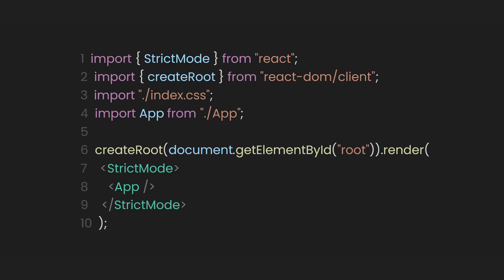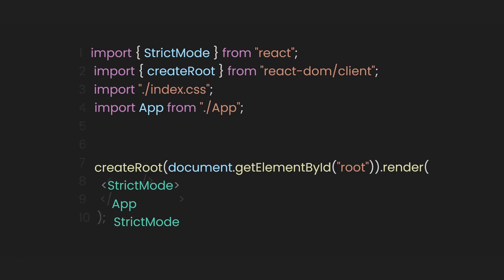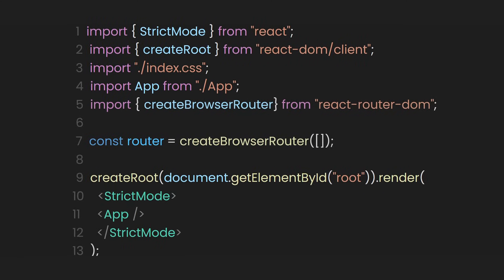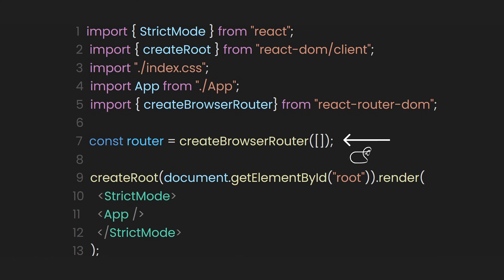Let's go to our main file to set up our React Router. First, let's import the createBrowserRouter function from react-router-dom. It is used to define all the routes in your app and how they connect to components. It uses the browser's history API, like the address bar, to manage navigation between pages.